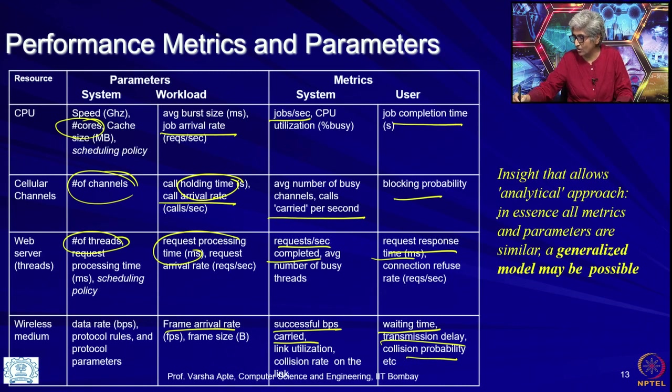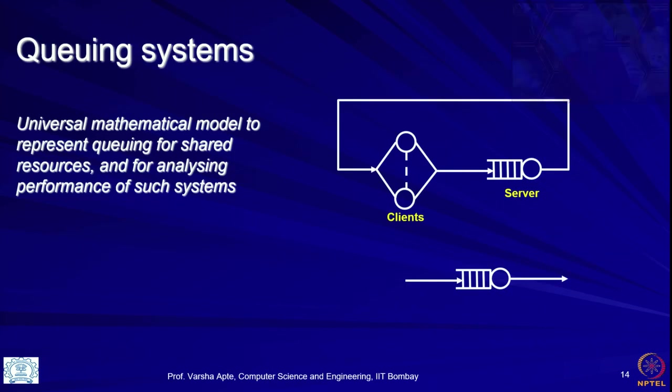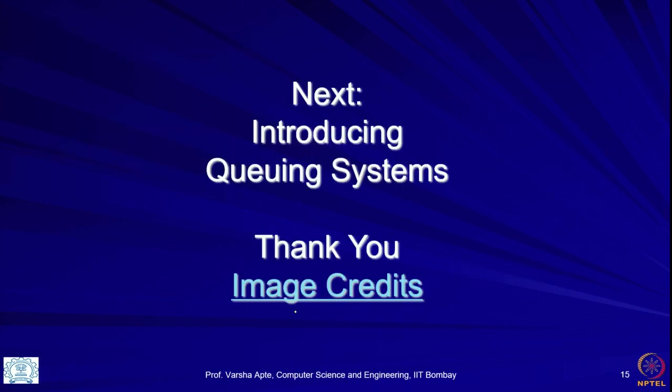The insight that allows an analytical approach is that in essence all metrics and parameters are similar and we can generalize this view. This generalized view is what is called queuing systems — a universal mathematical model to represent queuing for shared resources and for analyzing the performance of such systems. From the next lecture, I will introduce queuing systems, and the rest of the course is largely about using queuing systems to understand and carry out performance analysis. Thank you.